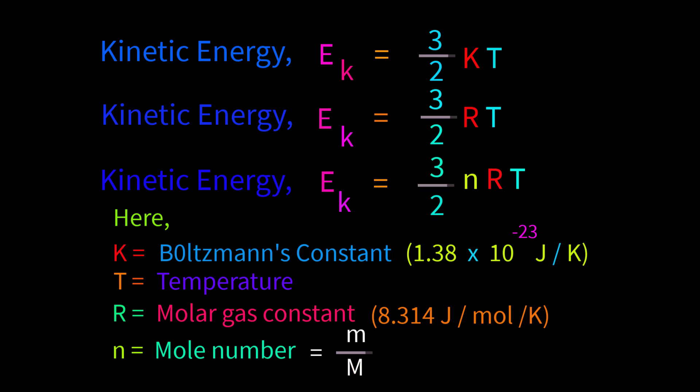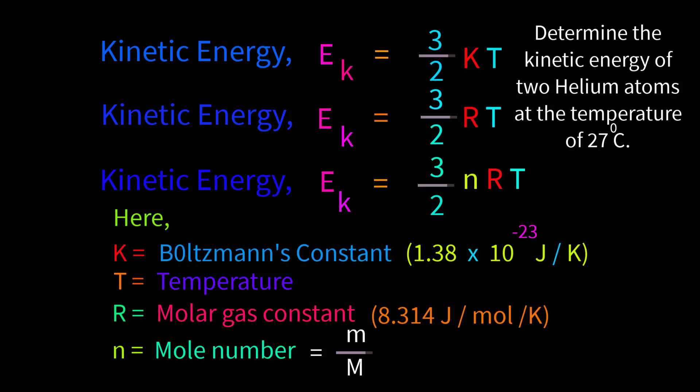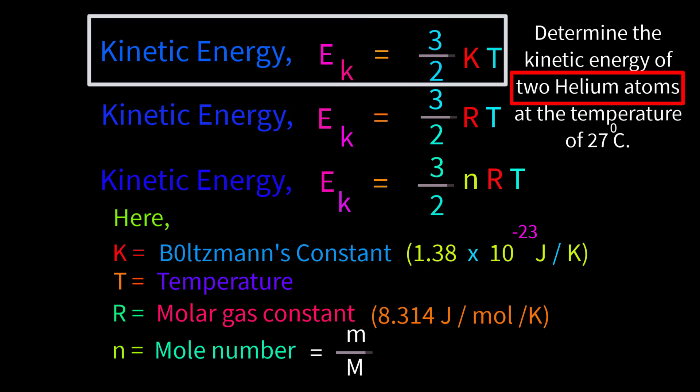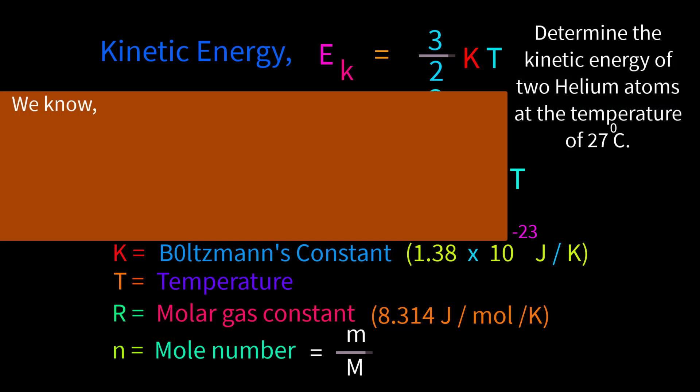Let us solve some mathematical problems. Determine the kinetic energy of two helium atoms at a temperature of 27 degrees Celsius. We are asked to determine the kinetic energy of two atoms. So which equation should we apply? Certainly Ek equals 3/2 kT.